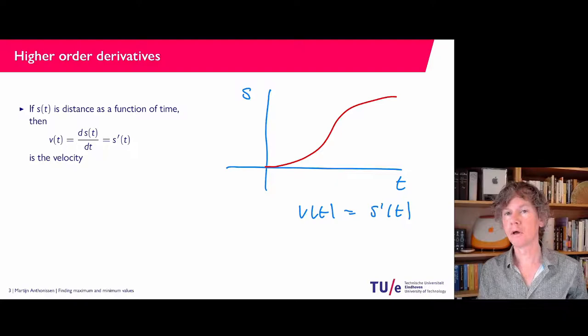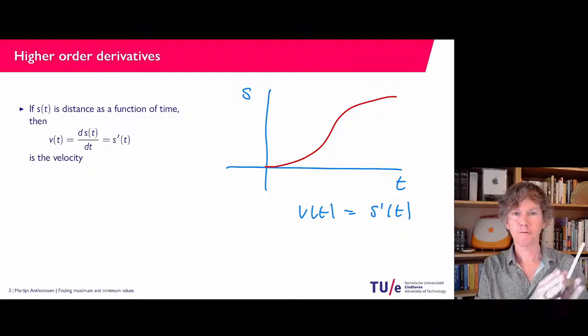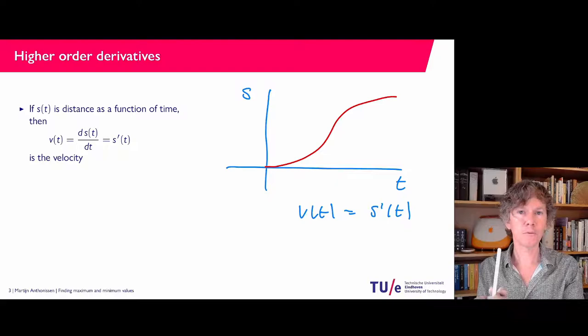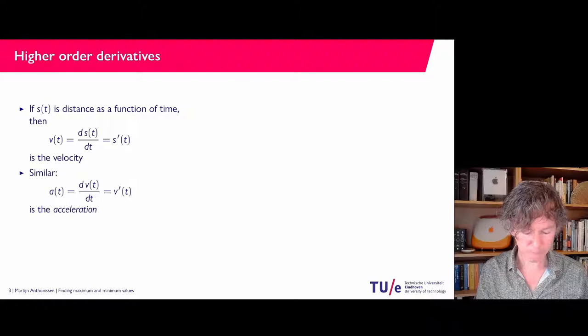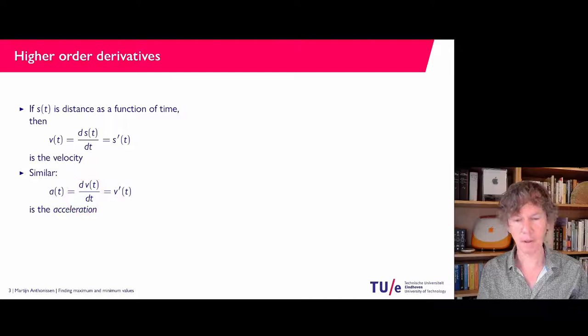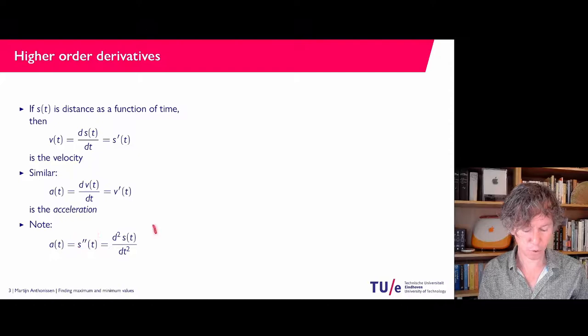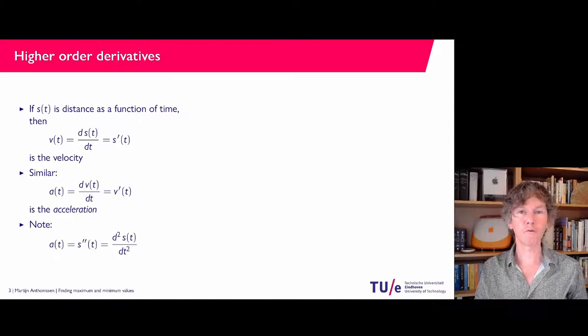As you may recall from physics, you have distance traveled, then velocity, and you can also talk about acceleration, which is the change of velocity — that is, the derivative of the velocity. So acceleration, a of t, is v prime. Going back, you can also differentiate the original function s of t twice, so a of t is the second derivative, indicated with two primes or d²s/dt². You can also talk about the third or fourth derivative, and depending on the application, they have their usages.